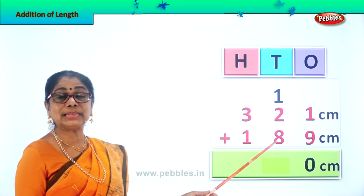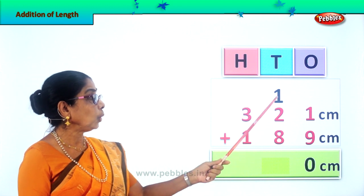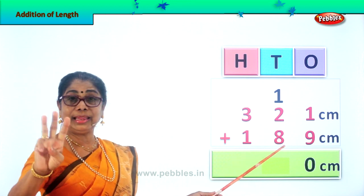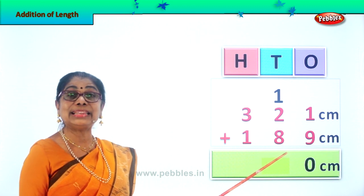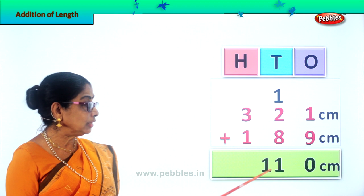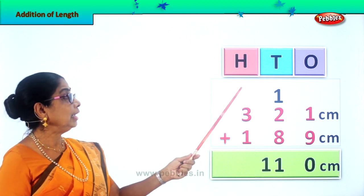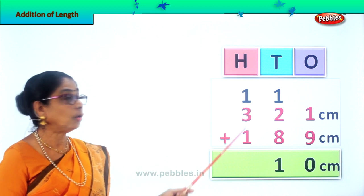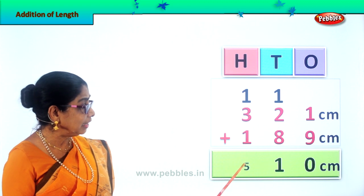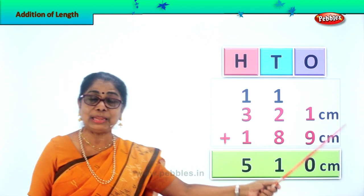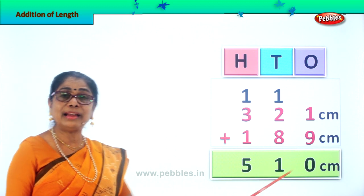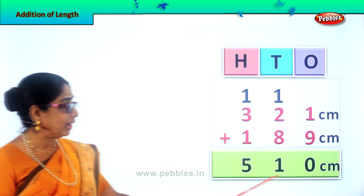Now we add up all the numbers in the 10's place. 1 plus 2 is 3. 3 plus 8 is 11. We leave the 1 in the 10's place and take the 1 ten into the 100's place. Now let's add all what is in the 100's place. 1 plus 3 is 4. 4 plus 1 is 5. So we write here 500. 321 centimeters plus 189 centimeters is equal to 510 centimeters.